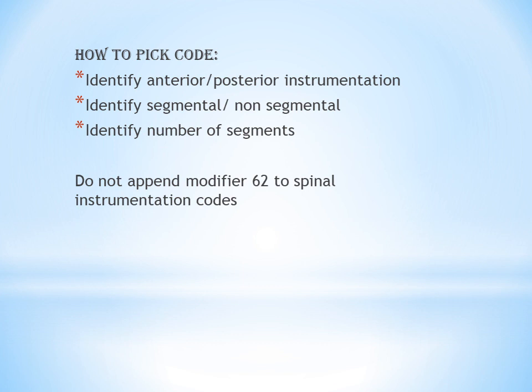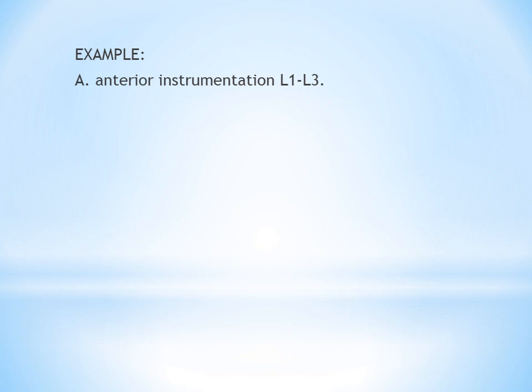To pick the instrumentation code, first identify whether it is anterior or posterior instrumentation, then identify if it is segmental or non-segmental, then identify the number of vertebral segments involved. For instrumentation, it is always the number of segments, not the interspace. One additional guideline: do not append Modifier 62 to spinal instrumentation codes. Modifier 62 is used when two surgeons perform distinct procedures, but it cannot be applied to spinal instrumentation codes.